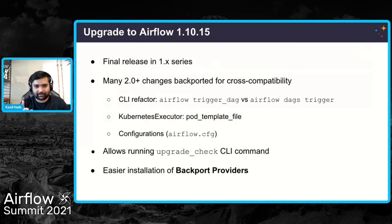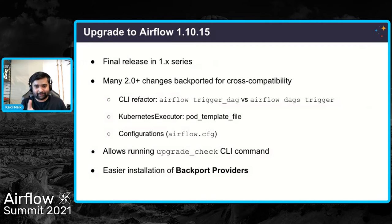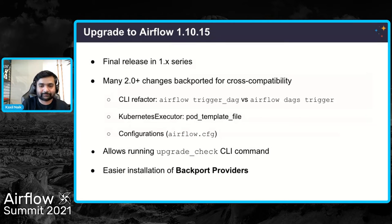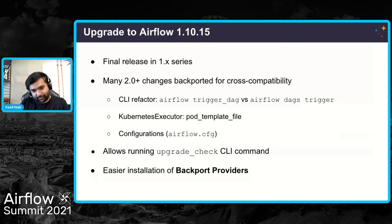Some of the important changes in 1.10.15 include new CLI commands. The CLI was refactored into 2.0 with a logical grouping of commands. For example, all DAG-related commands are grouped under the 'airflow dags' command. Previously you had 'trigger_dag', 'show_dag' as separate commands — now they are grouped as 'airflow dags trigger', 'airflow dags show', and so on. These commands work on both Airflow 1.10.15 and Airflow 2 and above.